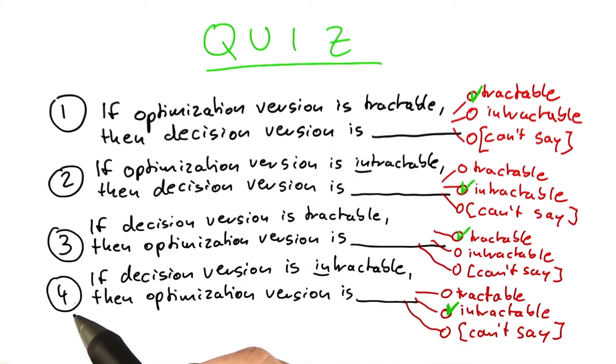The same thing is true for answer number four, because if the decision version is intractable, then the optimization version also has to be intractable. If you could easily solve the optimization version, then it would also be easy to answer a yes or no question about the solution.